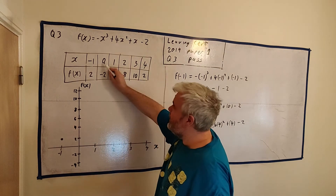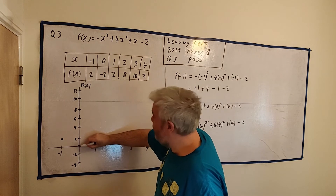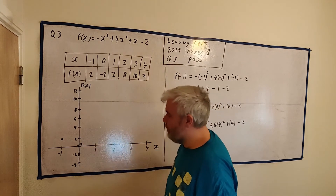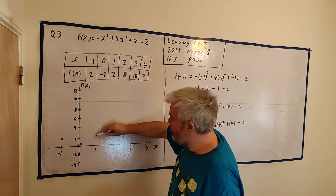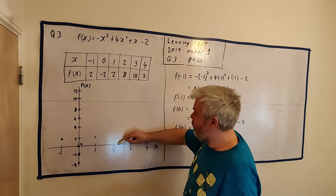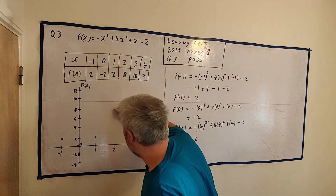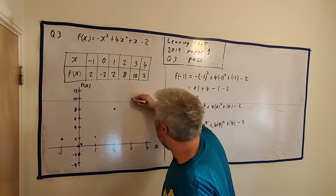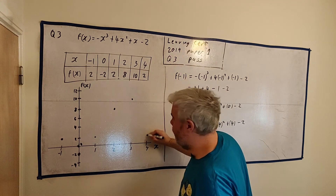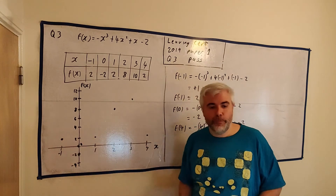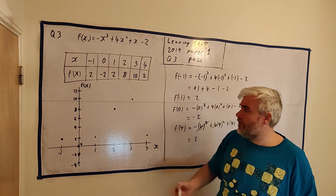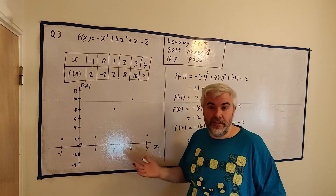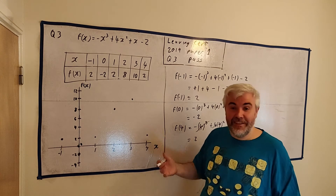So there's x=−1, y=2; x=0, y=−2 is here — there's my second point. Then x=1, y=2 is about here. x=2, y=8 is about here. x=3, y=10 is around there. And x=4, y=2 is about here. You've just got lots of marks — each one of these points probably gets you one mark each. That's five or six points, so you should pick up around five marks for those.